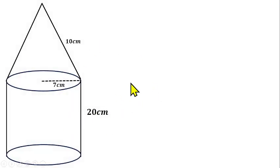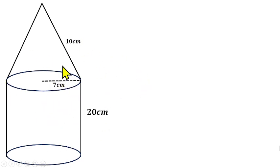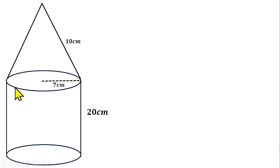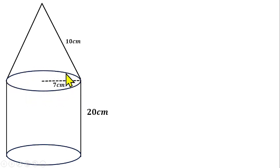The area where students find difficulty is finding the total surface area of this solid shape. When finding the surface area of a composite shape like this, many students tend to add the circular top of the cylinder — which is the same as the circular base of the cone — to the total surface area. That is wrong. This circular top is not part of the visible surface, which is why it's not shown in the diagram.